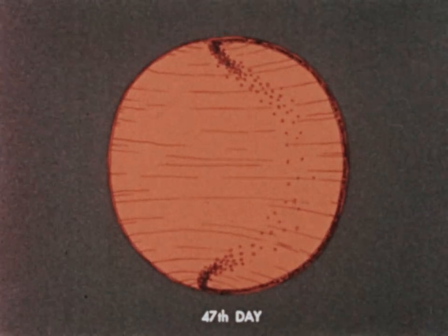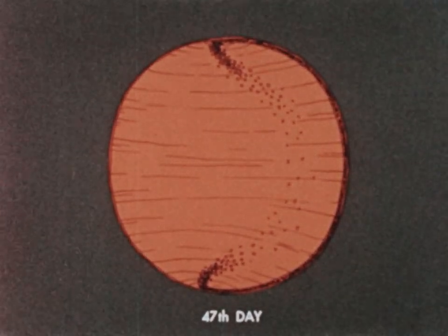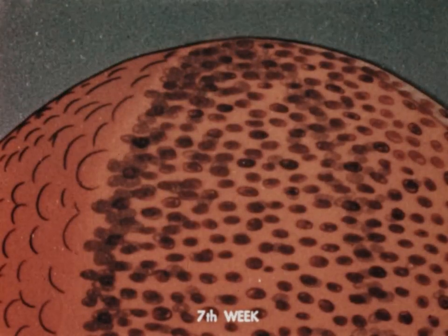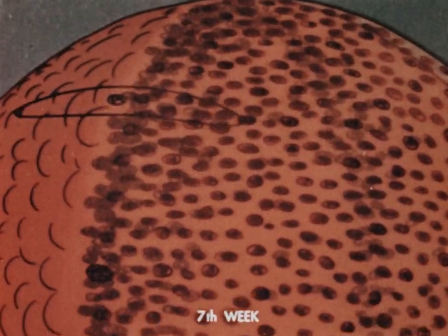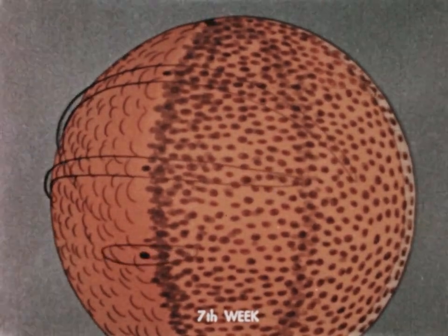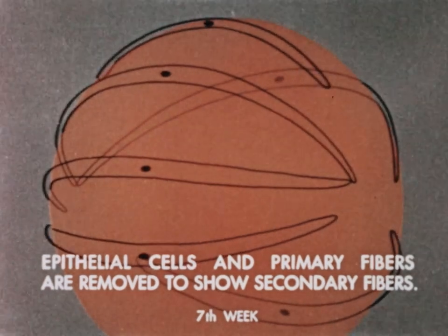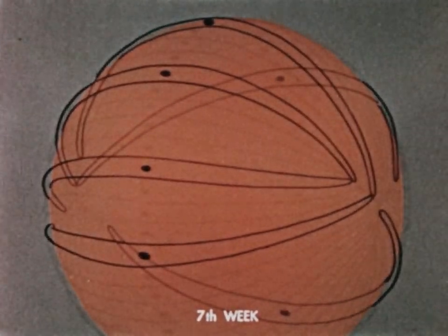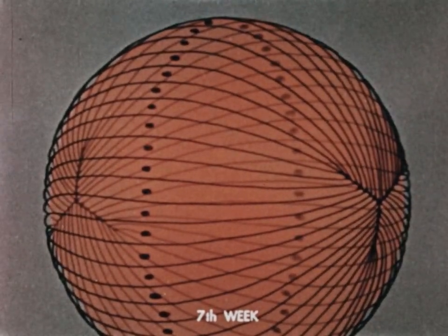As a second stage in development of the lens begins, once a roughly spherical shape is achieved, in the region of the equator, some of the cuboidal cells elongate to form the first secondary fibers. They are thick at the equator, but taper as they grow towards the front and back of the lens. Because they can't become thin enough at the ends to meet other fiber ends at a single point, a linear suture results.